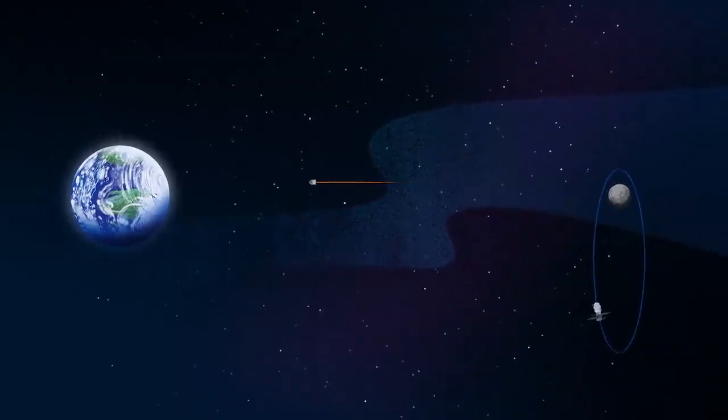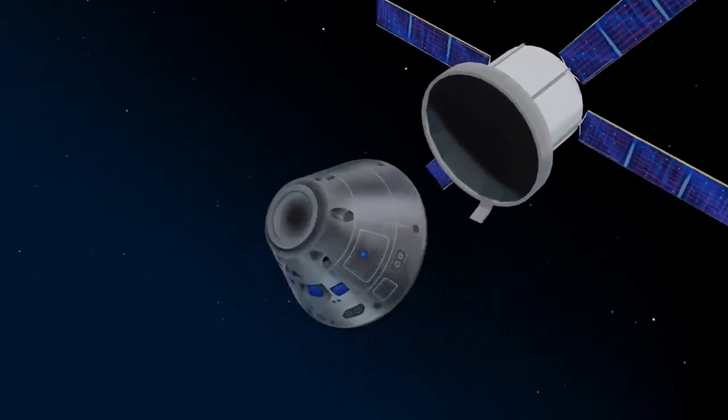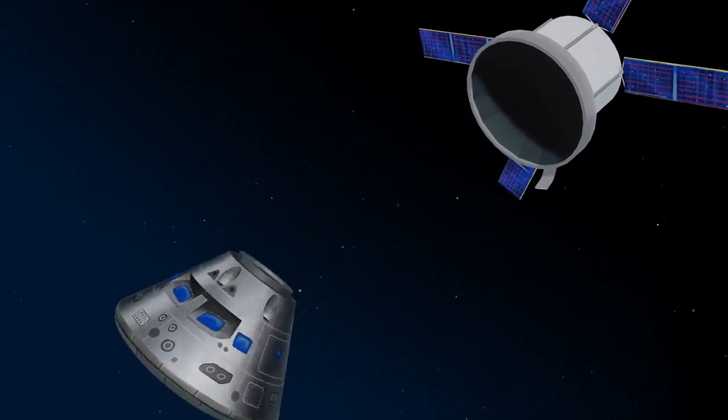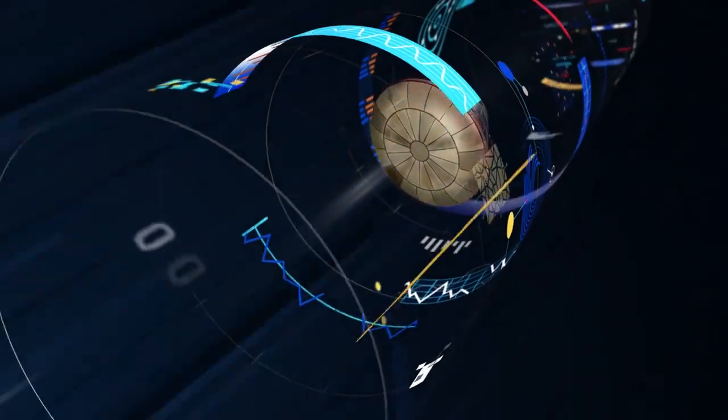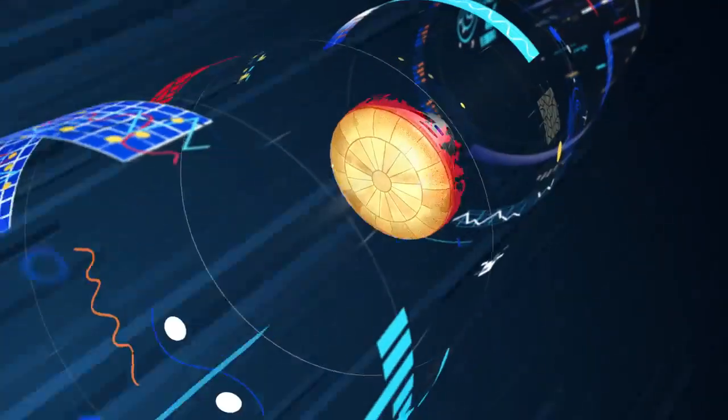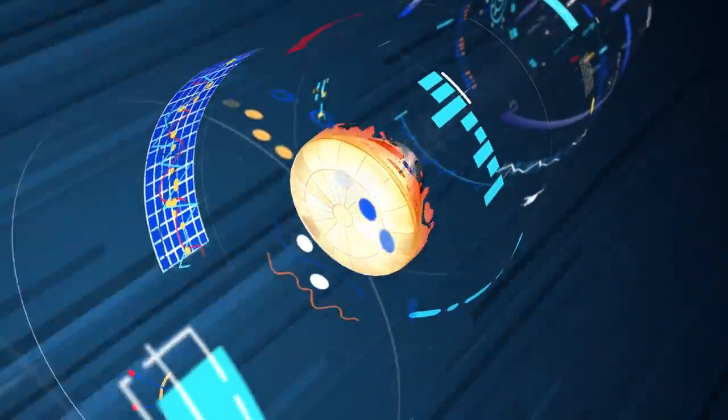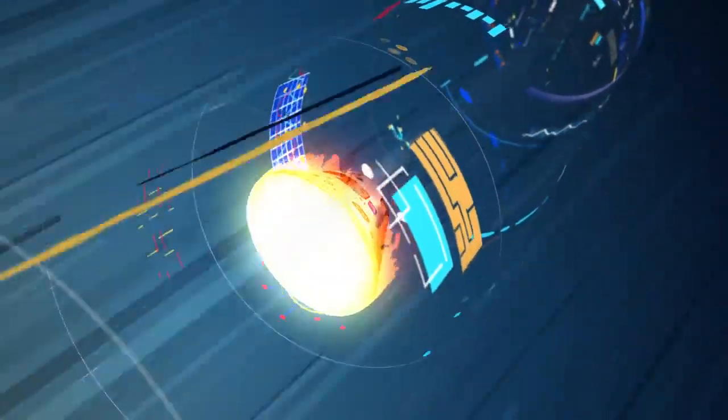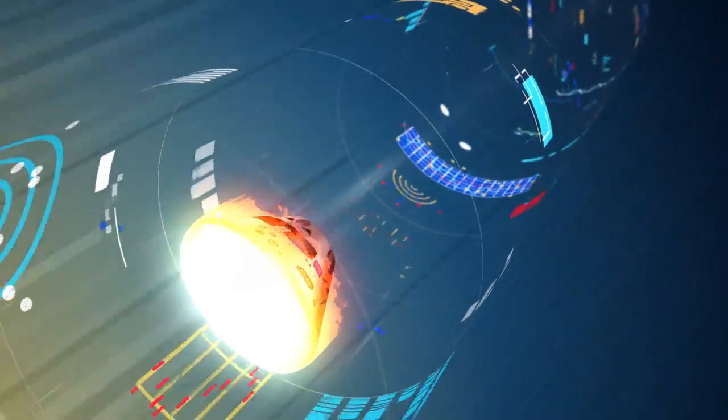As they near the end of this journey, the service module is released, and the crew module is oriented heat shield first. Entering Earth's atmosphere at 25,000 miles per hour, the friction of air slows Orion considerably, while also subjecting it to temperatures of 5,000 degrees.